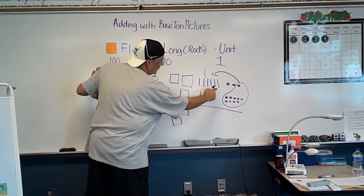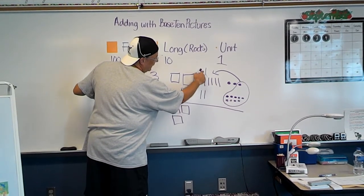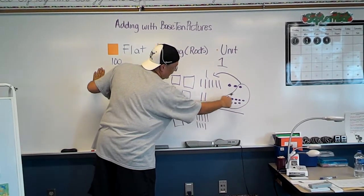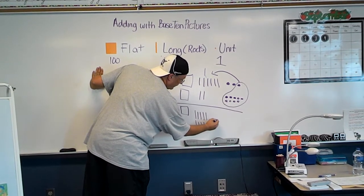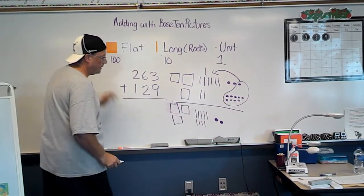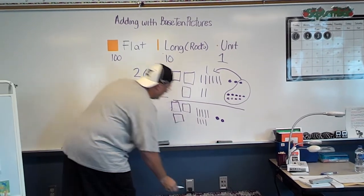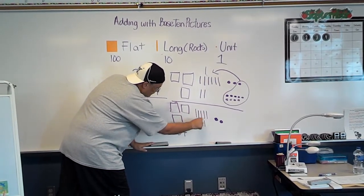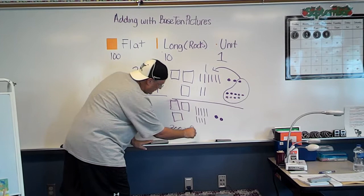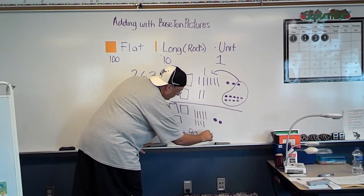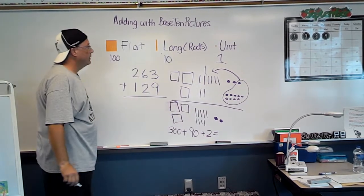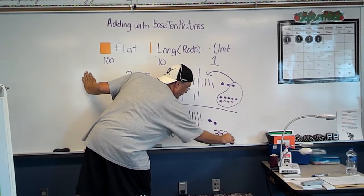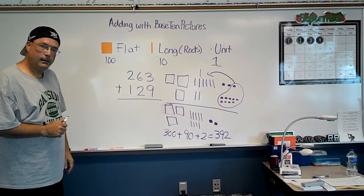I've got my 1, 2, 3, 4, 5, 6, 7, 8, 9 longs. And then I have my 2 ones that were left over or remaining. So I know that my pictures, my 3 flats have a value of 300 plus my 9 longs have a value of 90 and my 2 ones have a value of 2. When I add that together, that has a total value of 392. All right? Let's try one more.